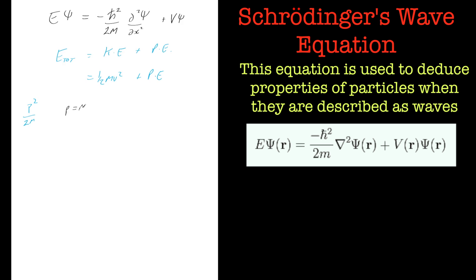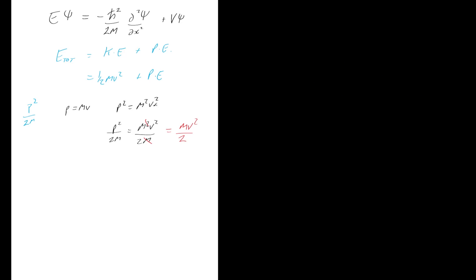So p is momentum: p equals mass times velocity. So p squared equals m squared v squared. So p squared over 2m is simply another way of writing half mv squared, because it's m squared v squared over 2m, and if we cancel the m's out we are left with mv squared over 2, which is half mv squared.